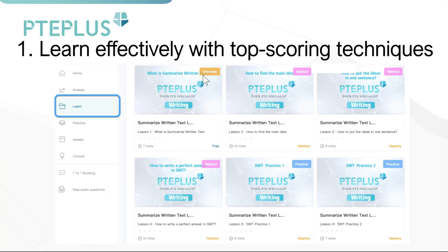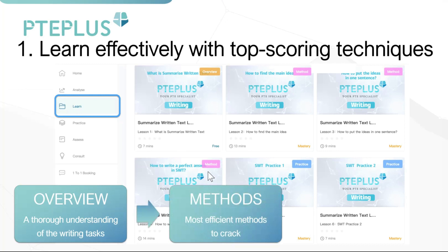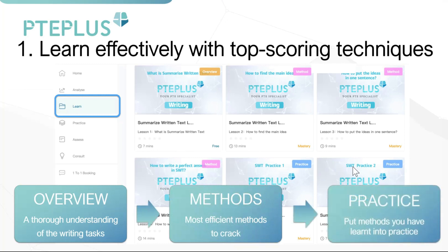Looking at Summarize Written Text, you can see that the lessons progress you through mastering this question type — firstly with an overview lesson giving you a thorough understanding of what's involved and what the machine wants, then methods lessons that equip you with the best techniques to tackle the question type and achieve top scores, and finally practice lessons where you do it with the teacher and put those techniques into practice.